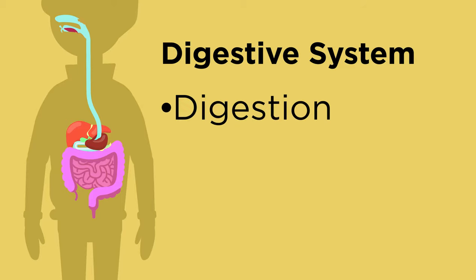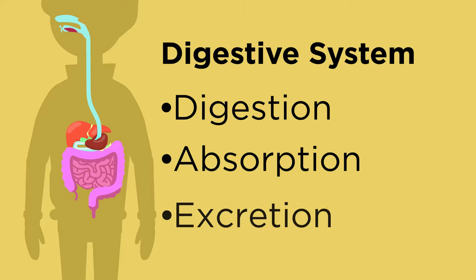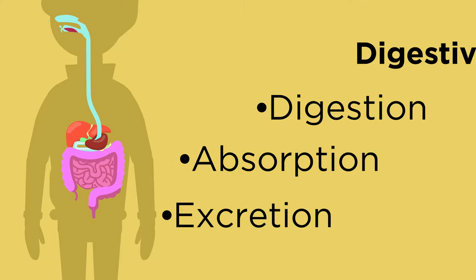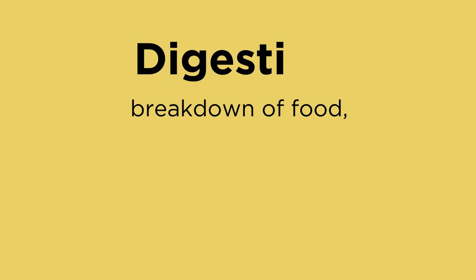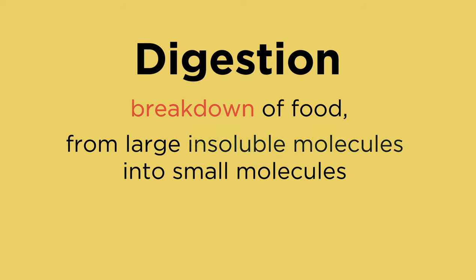Digestion goes hand-in-hand with absorption, which happens in your small intestine - which is what we're going to look at in this video. Digestion is the breakdown of food from large insoluble molecules into small molecules which can be used by your body. Digestion involves many organs before it reaches the small intestine.